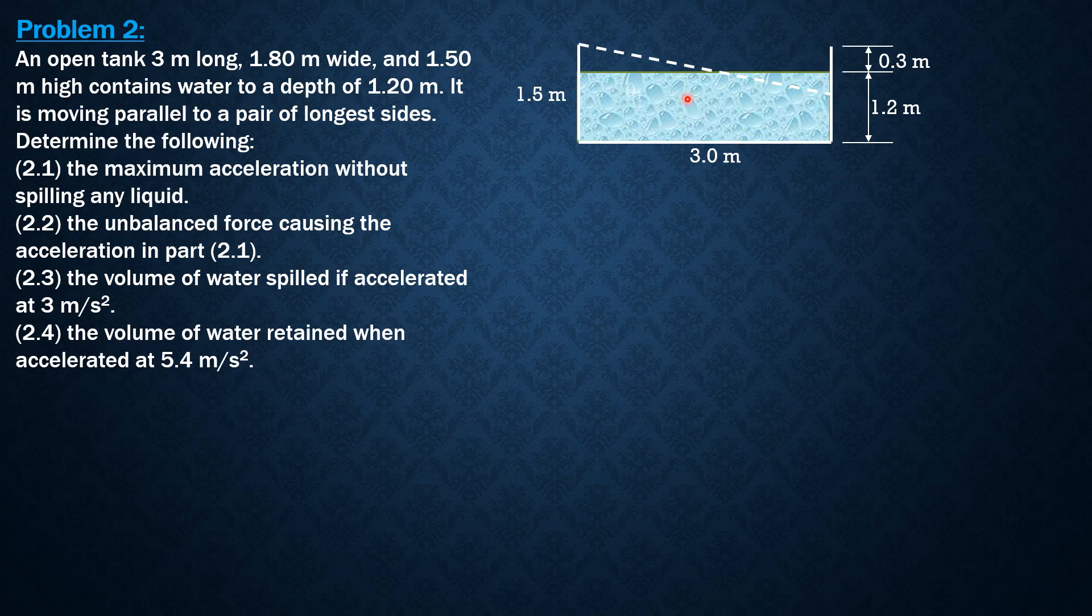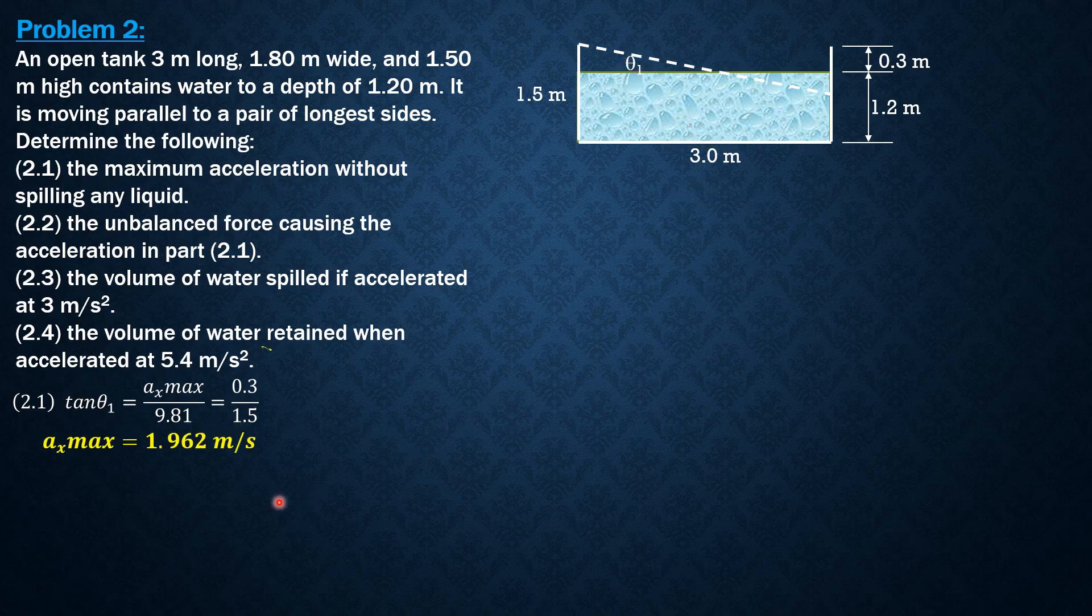Let's call this theta 1. Tangent theta 1 equals AX max over g, 9.81, which also equals 0.3 over 1.5, where 1.5 is half of 3. So AX max can now be computed without spilling any liquid: 1.962 meters per second squared.